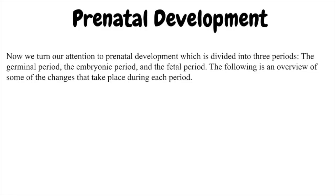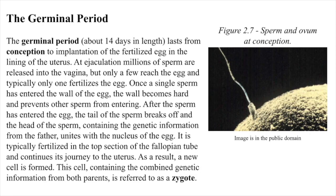Prenatal Development. Now we turn our attention to prenatal development, which is divided into three periods: the germinal period, the embryonic period, and the fetal period. The following is an overview of some of the changes that take place during each period. The germinal period, about 14 days in length, lasts from conception to implantation of the fertilized egg in the lining of the uterus.